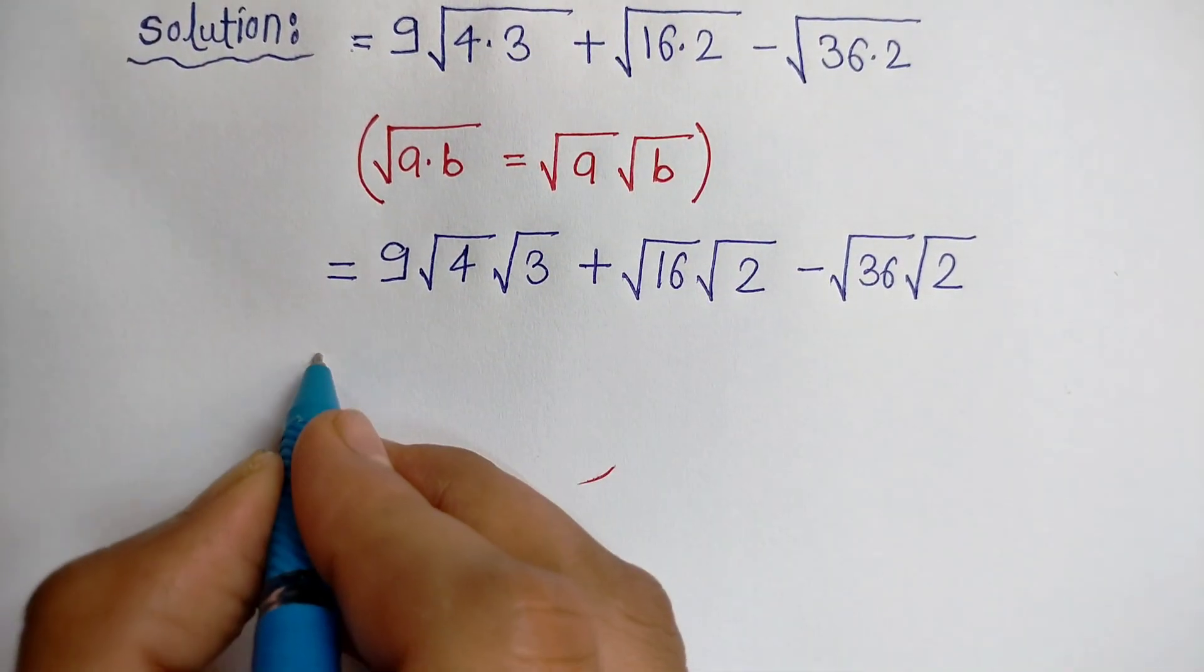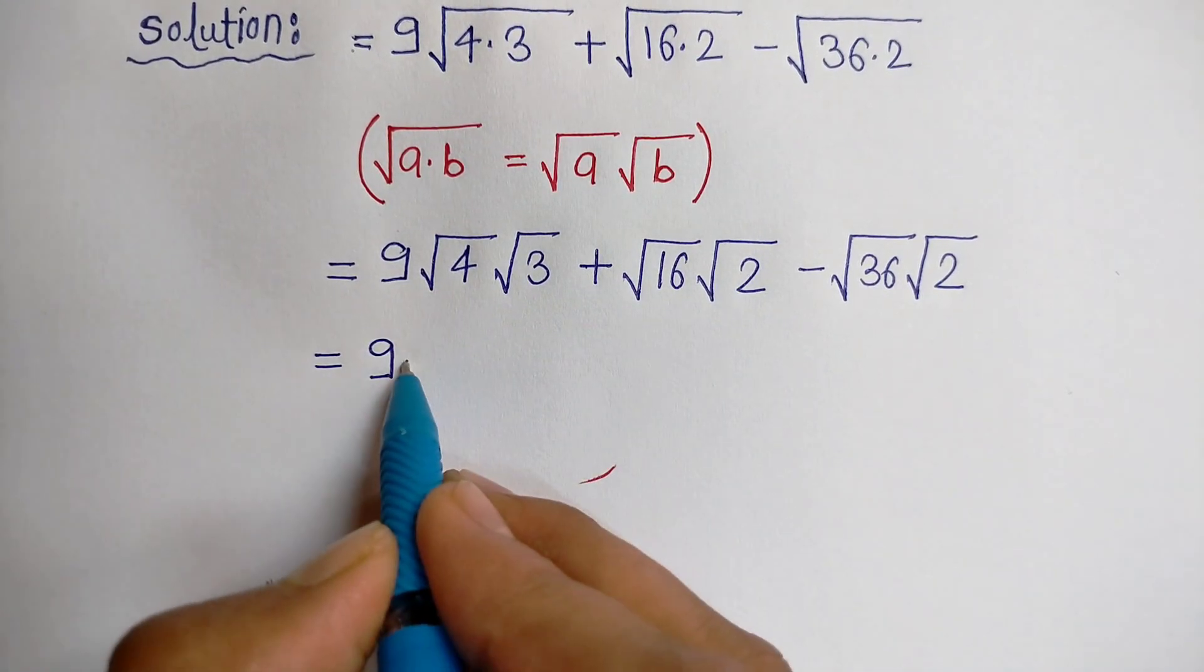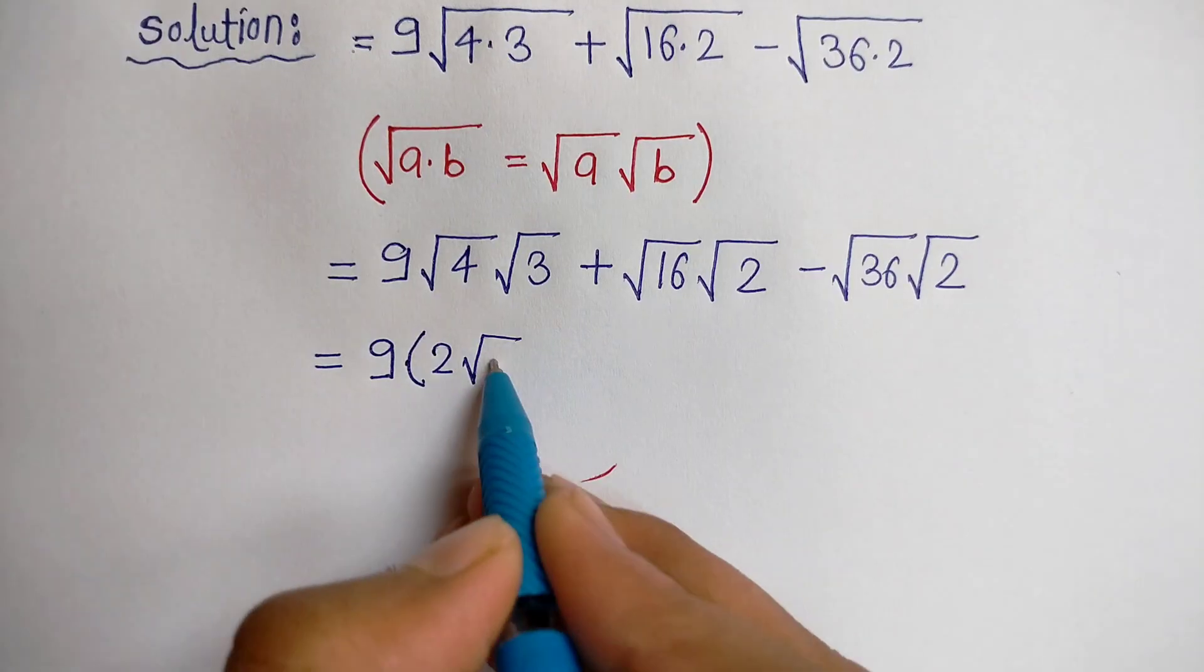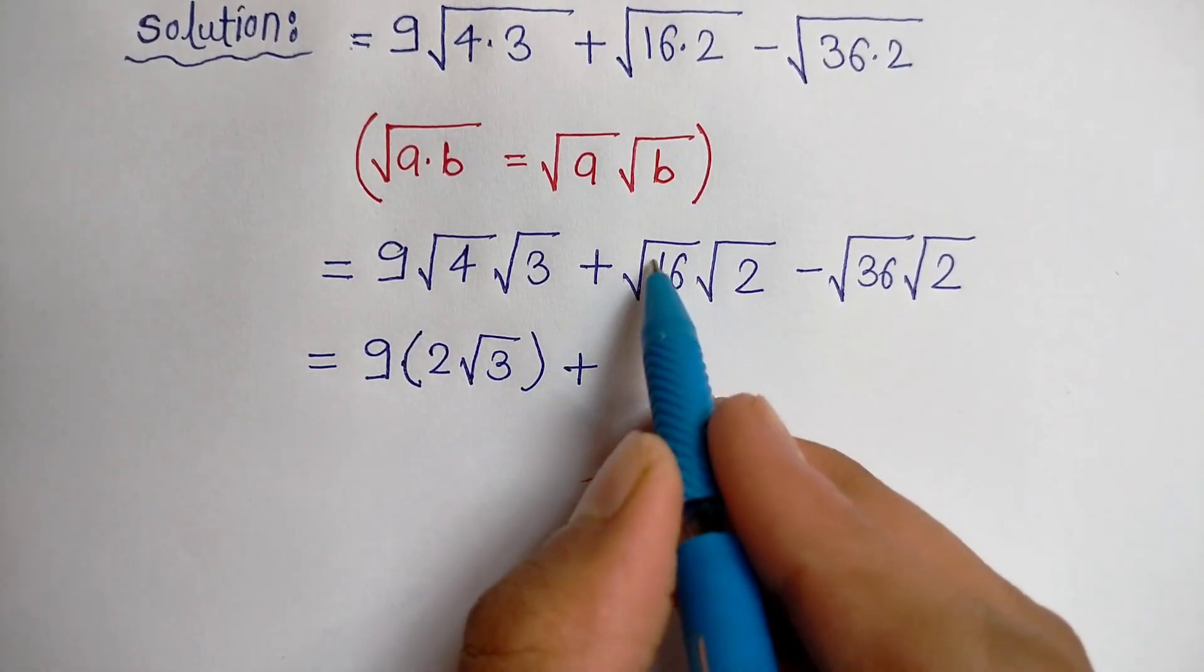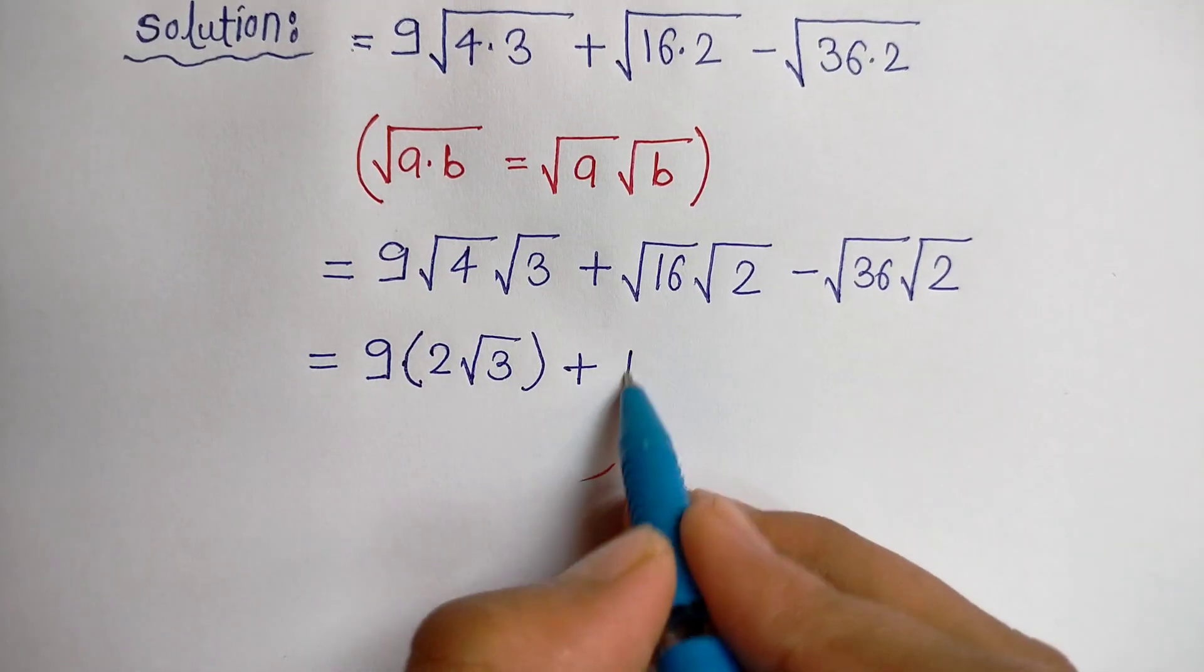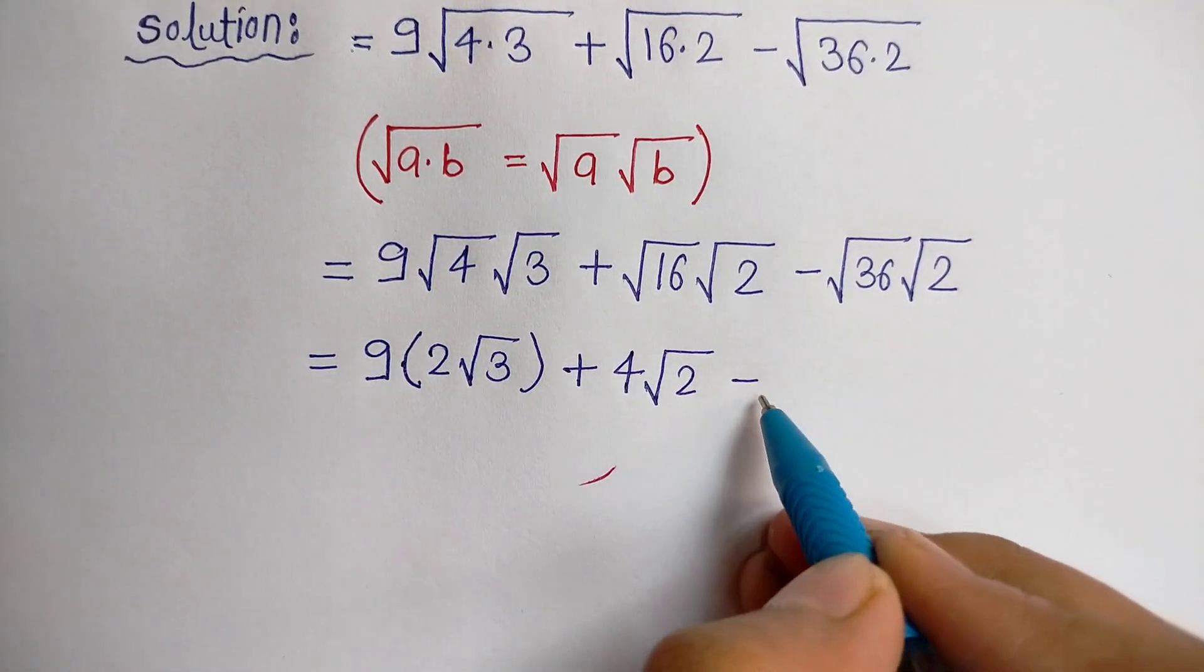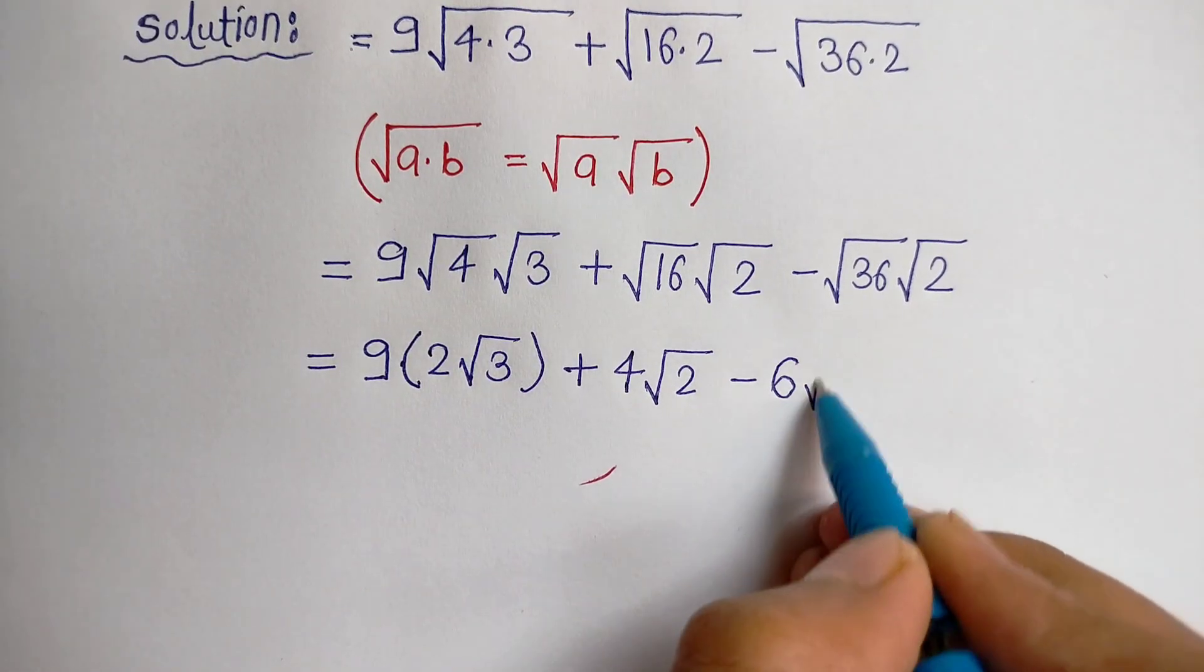Now that equals 9, the value of √4 is 2, √3, plus the value of √16 is 4 times √2, minus the value of √36 is 6√2.